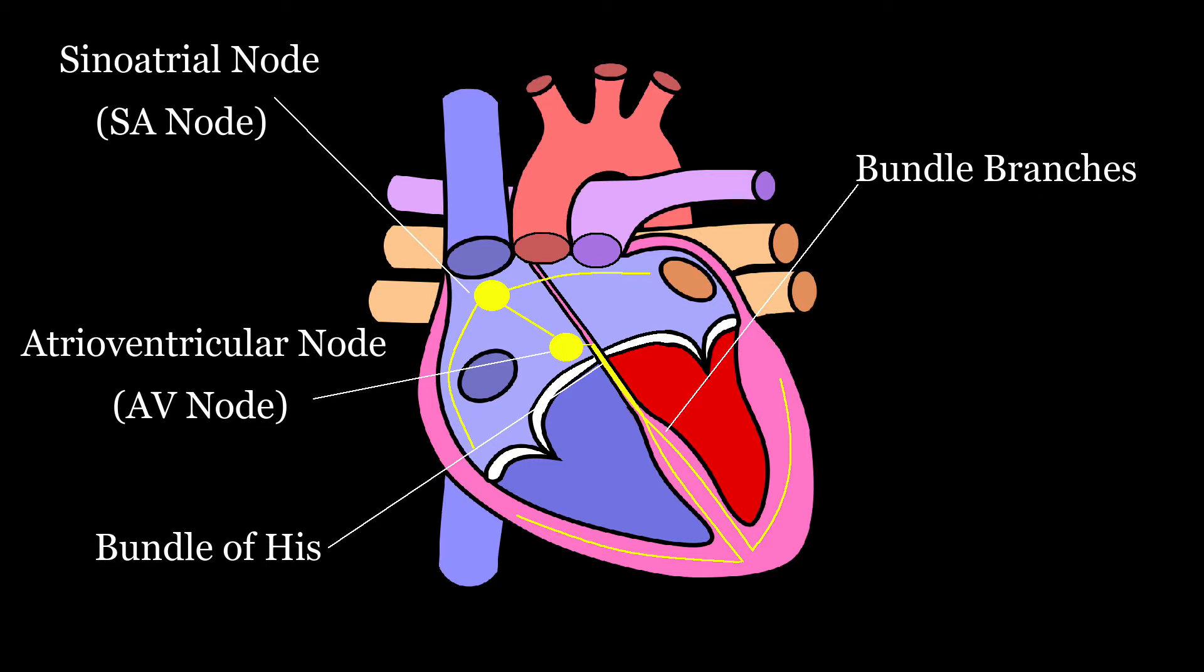From here, the branches further divide into smaller pathways called the Purkinje fibers. This stimulates the ventricles to contract and push blood throughout the body.